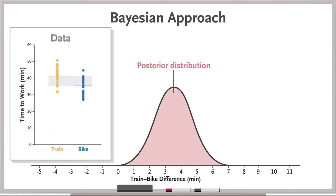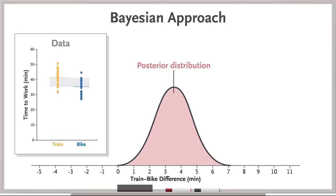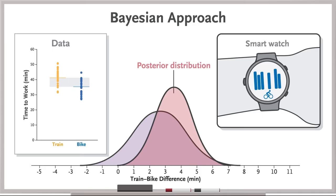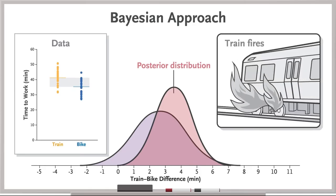To do this, you will need more than just your data. You also use any prior information you have on what the distribution looks like. For example, maybe you've ridden the route to work before, and you have a sense of the time it took from your smartwatch. Or if you're aware of electrical fires delaying trains recently, you might think that the distribution should be weighted towards the train taking much longer.